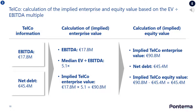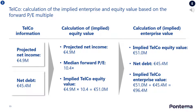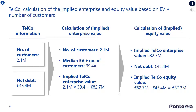This slide shows the calculation of the implied enterprise and equity value based on the enterprise value divided by the EBITDA multiple. The following slide shows the calculation based on the forward price-earnings multiple, and the final slide shows the calculation based on the enterprise value divided by number of customers multiple.